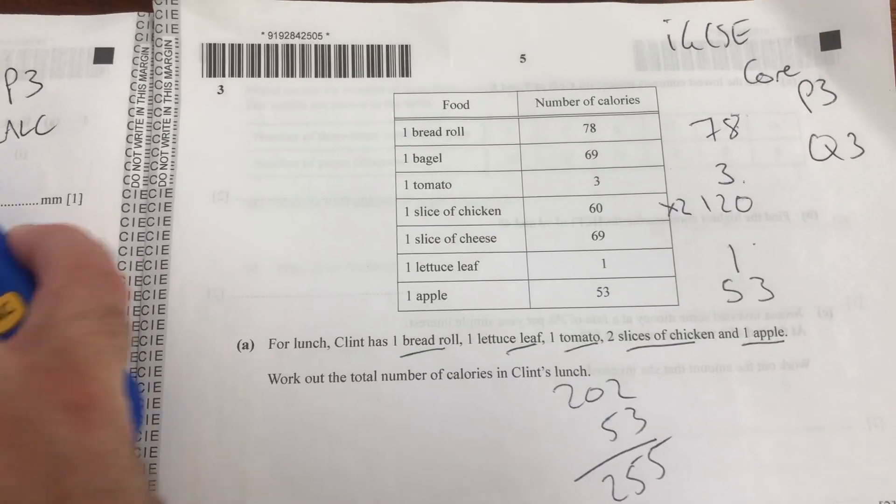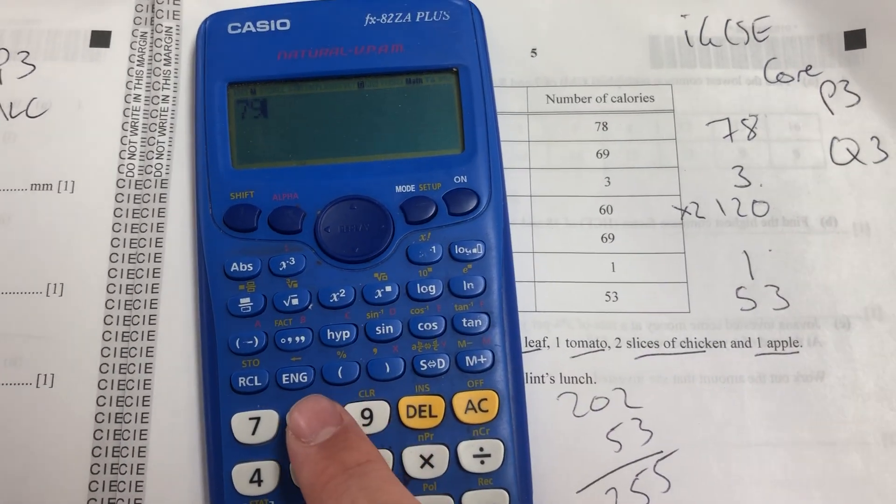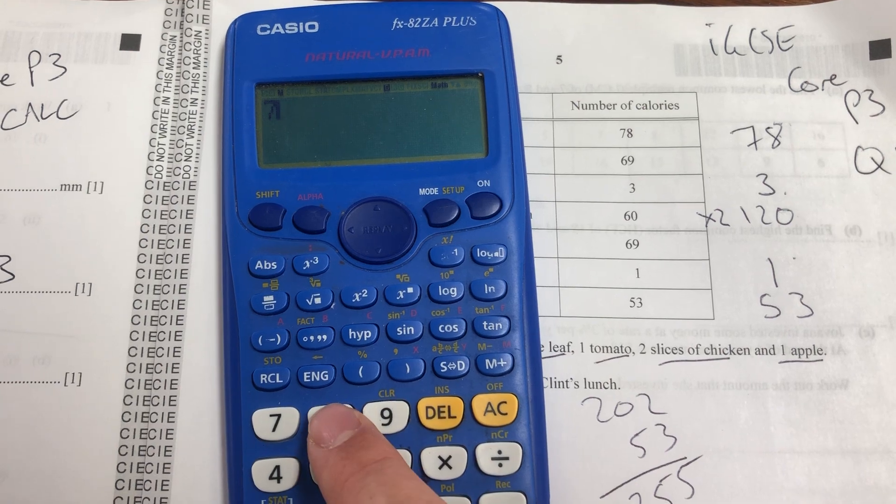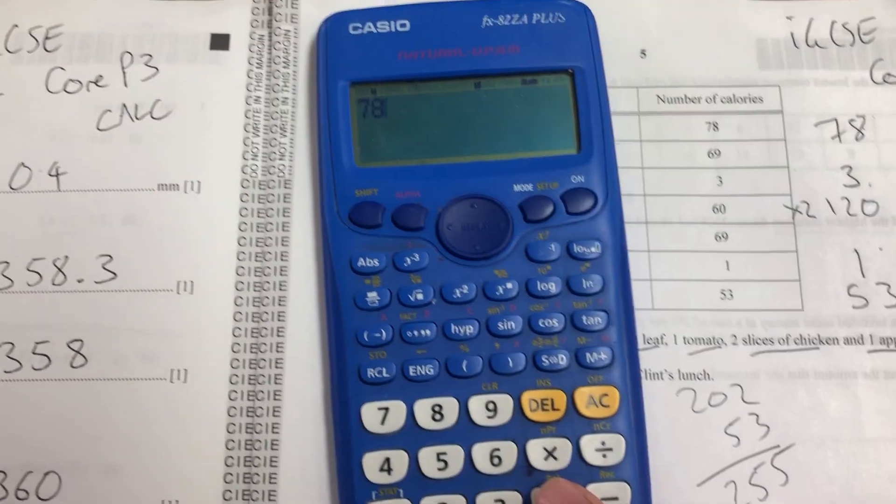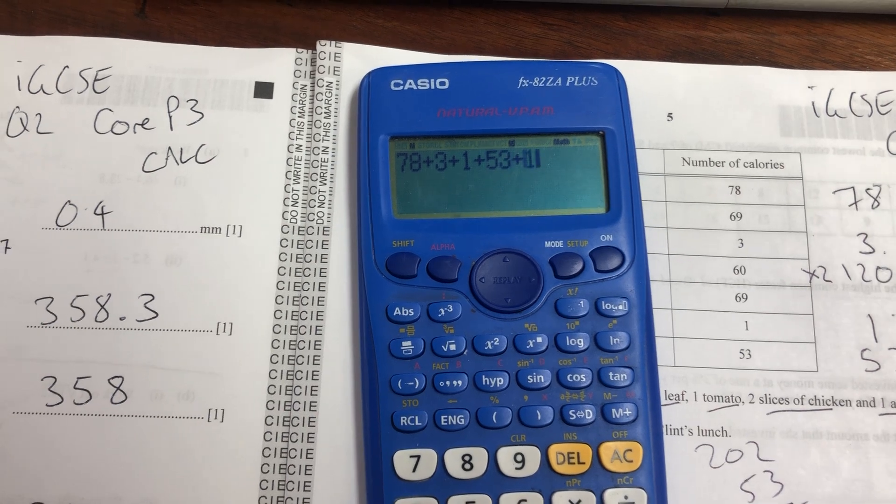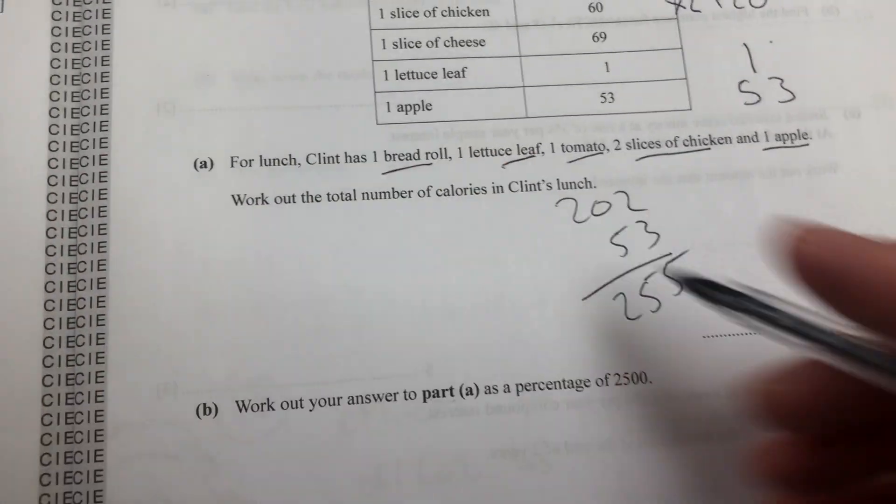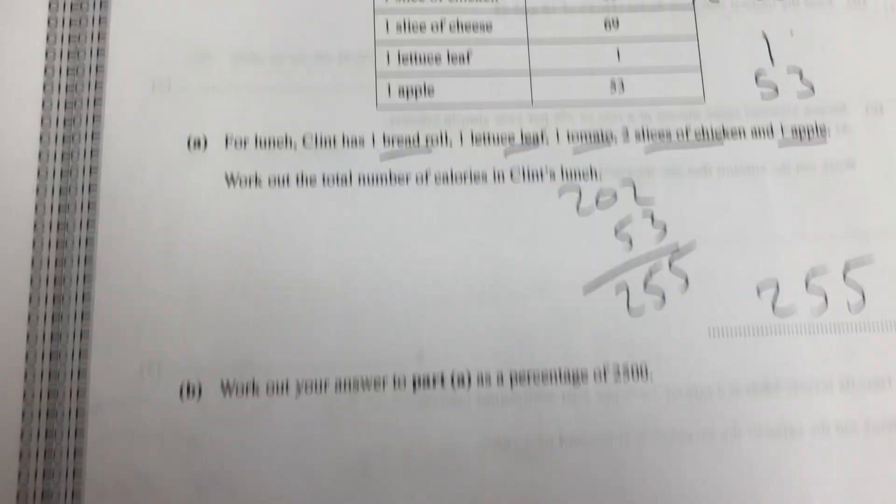Fortunately it's a calculator paper, so I can just add those up as well. 78 plus 3, plus 1, plus 53, plus 120, yeah 255. Okay, so that should be the number of calories that he eats.